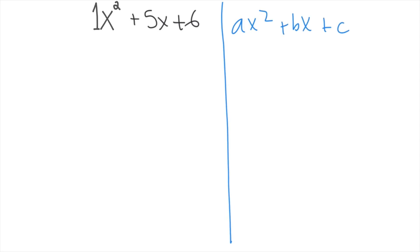In the first step, you need to identify what the a, b, and c are equal to by looking at your trinomial. So here we see that a is equal to 1, b is equal to 5, and c is equal to 6.